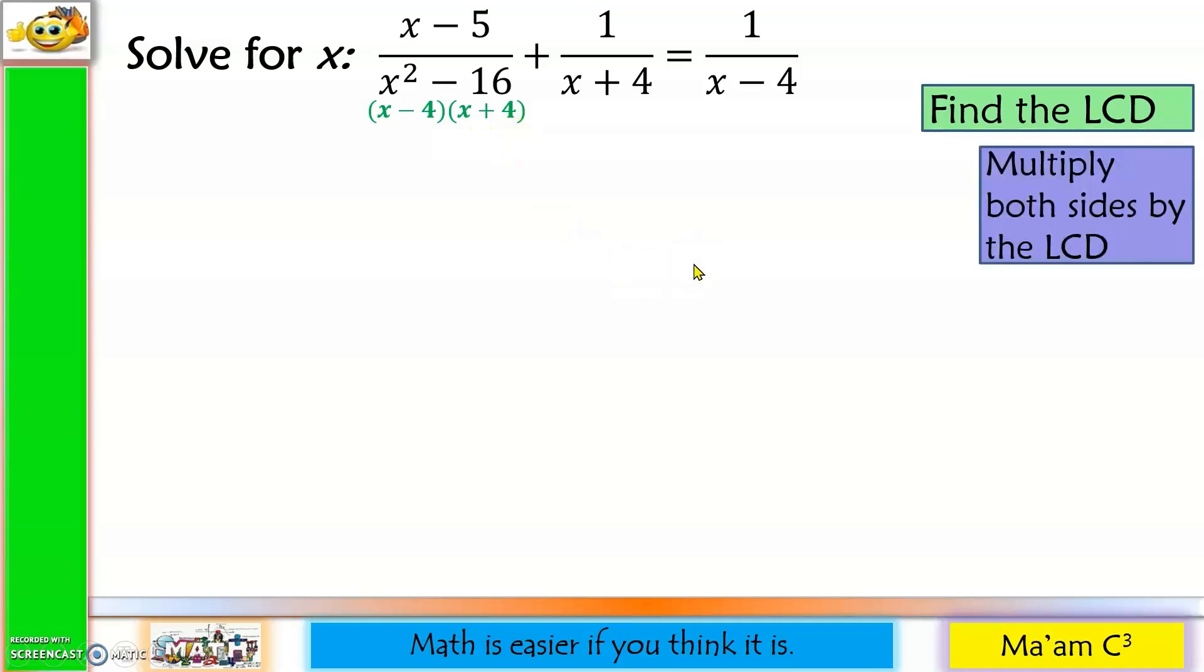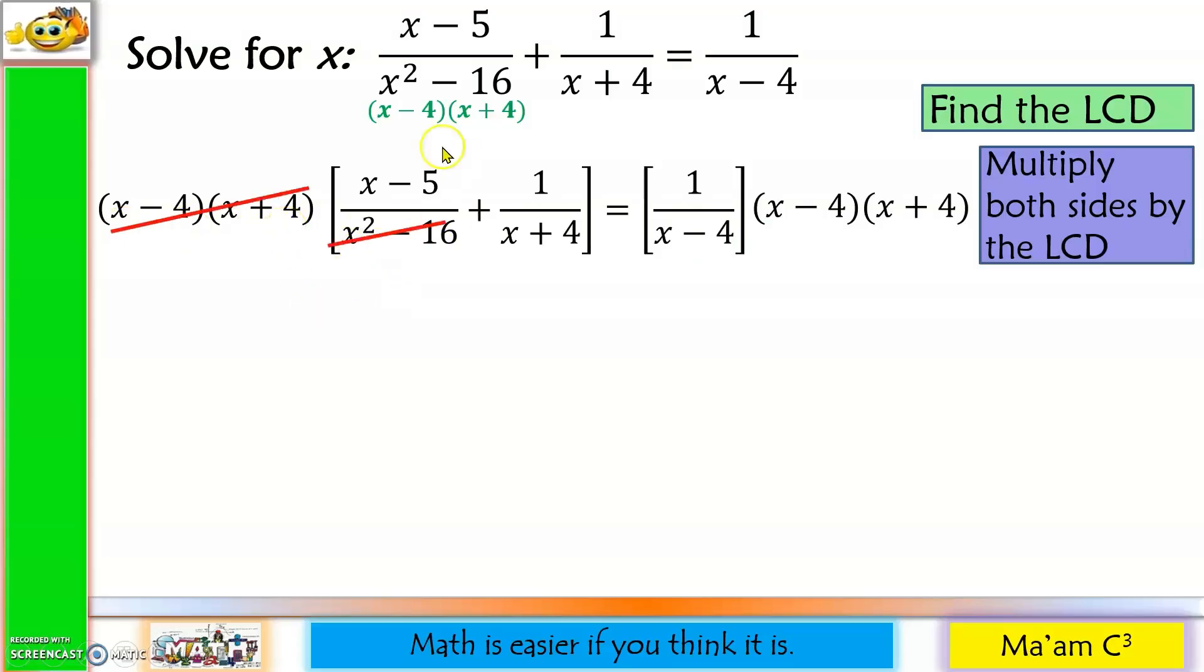Next step: multiply both sides by the LCD. Now, the factors of x squared minus 16 are x minus 4 and x plus 4. So this will be cancelled out. What is left? x minus 5. Copy plus. Next, for this fraction, x plus 4 will be cancelled out, leaving us with x minus 4 times 1. So still x minus 4. Equals. Now, on this side, we have x minus 4 and x minus 4. Cancel. 1 times x plus 4 is still x plus 4.